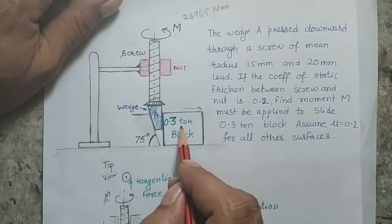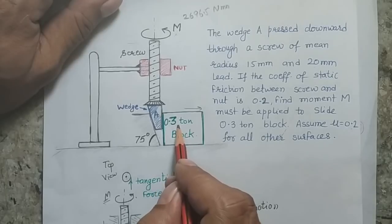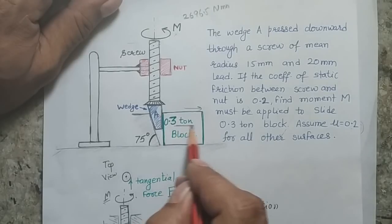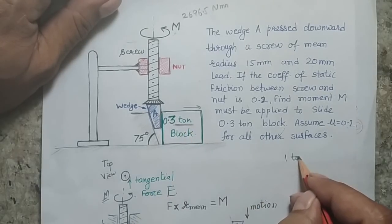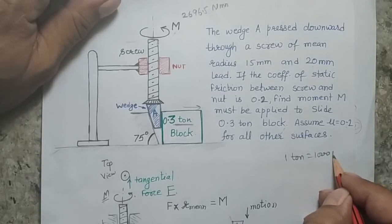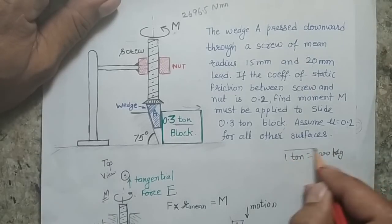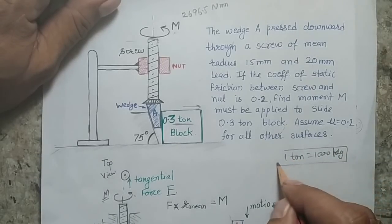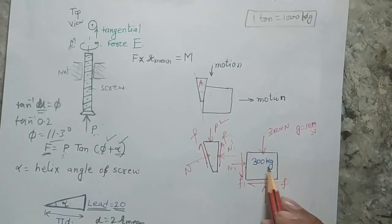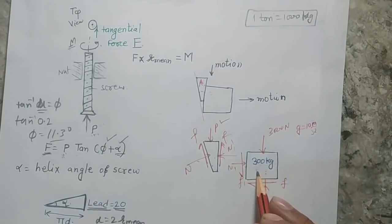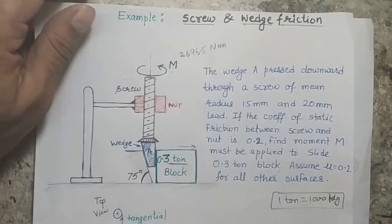Note that the mass of the block is given in tonnes: 1 tonne = 1000 kg, so 0.3 tonne = 300 kg, and therefore the weight used in the equations is 3000 N (using g = 10 m/s²). Thank you.